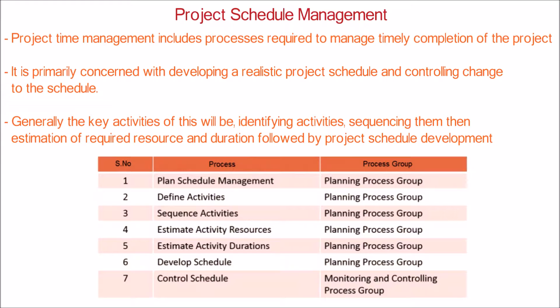Estimate Activity Resources: the process of estimating the type and quantities of material, human resources, equipment, or supplies required to perform each activity. Estimate Activity Duration: the process of estimating the number of work periods needed to complete individual activities with estimated resources.